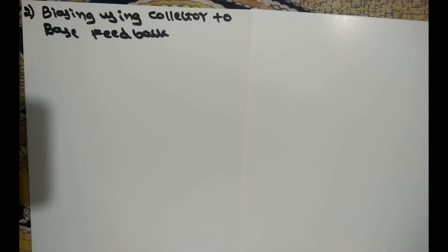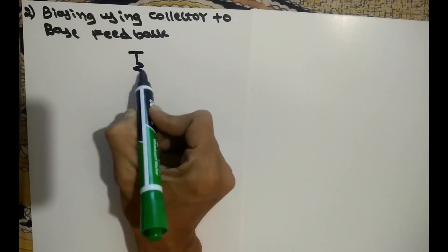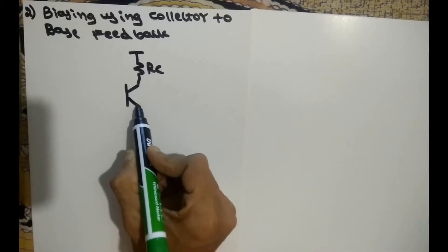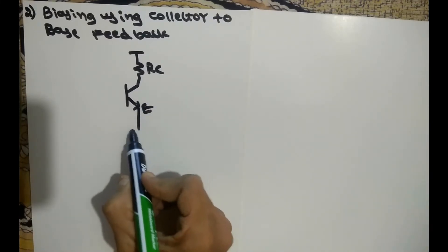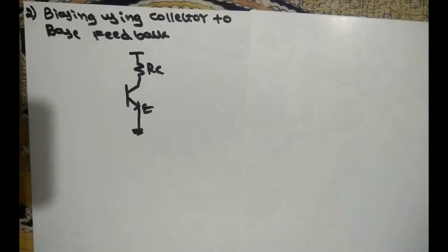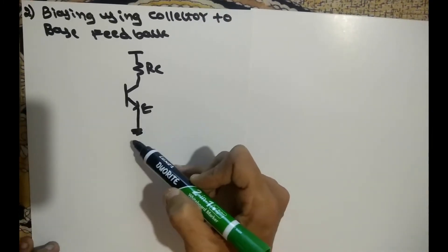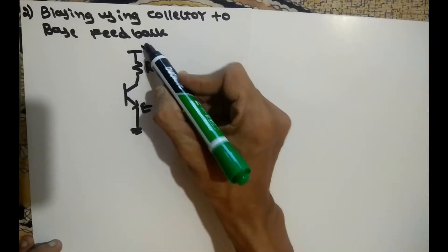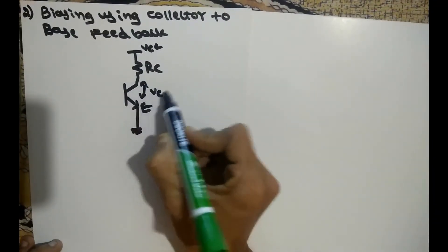The second topic we will discuss is biasing using collector to base feedback. In the previous circuit, on the output side we have RC resistance and a transistor with the emitter end, so it is an NPN transistor with no resistance required on the emitter side. This is the output side we previously discussed as voltage divider bias, with VCC and this portion called VCE.